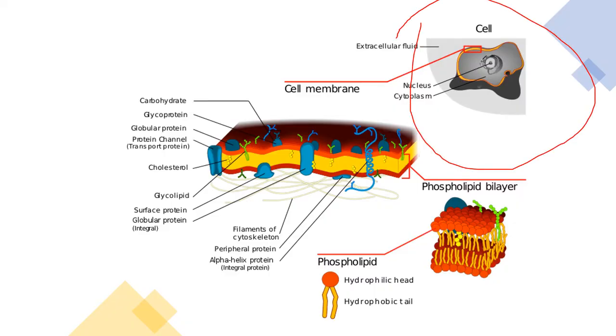Here you can notice a cell and you can see that the cell is covered by a membrane known as the cell membrane. And this cell membrane is made up of various molecules such as lipids, proteins and carbohydrates.